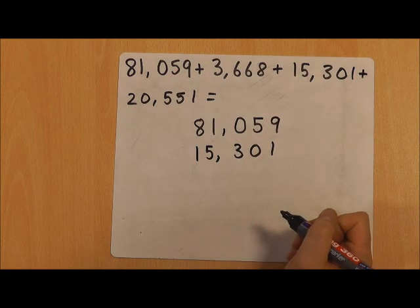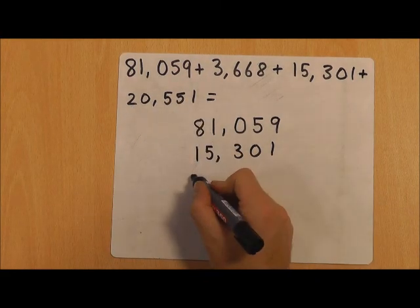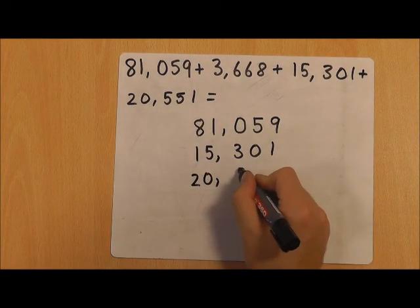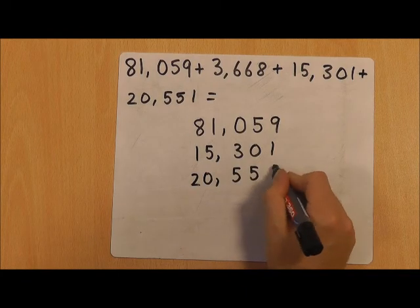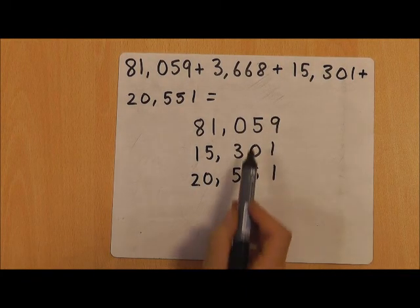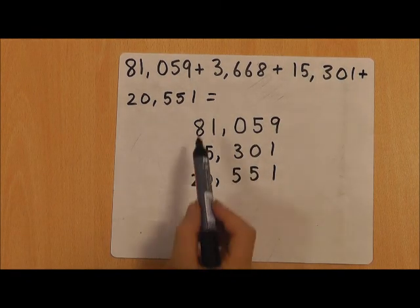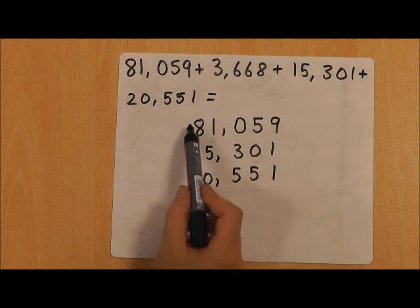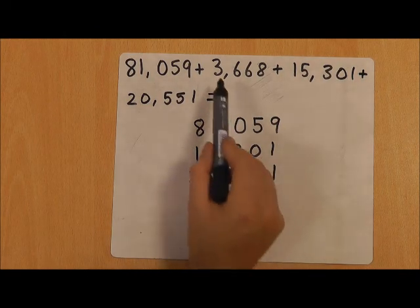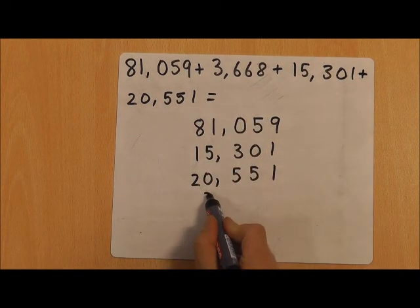Now I'm going to put 20,551, so you can see that I've lined up my units, my tens, my hundreds, my thousands, and my ten thousands. That just leaves me with 3,668 which needs to go here: 3,000 in the thousands column, 668.